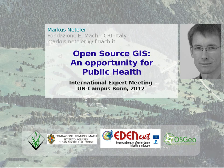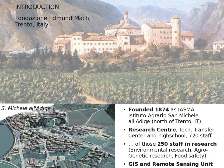A few words about the institution I work for and my work group. I work for the Fondazione Edmund Mach, located close to Trento, northern Italy. It was founded in 1847 as Instituto Agrario San Michele Aladige. Today it consists of a research center, a technology transfer center, and a high school with more than 700 staff, of whom 250 work in research. I am the head of the GIS and Remote Sensing Unit of the Research Center.